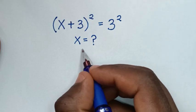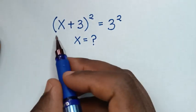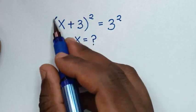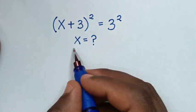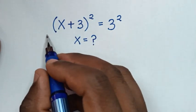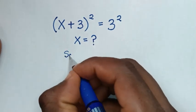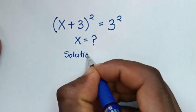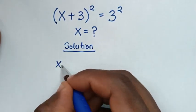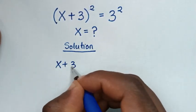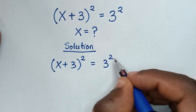Hello, you are welcome to solve this math problem which is (x + 3)² = 3². We need to find the values of x from this equation. Now, solution. From our problem: (x + 3)² = 3².